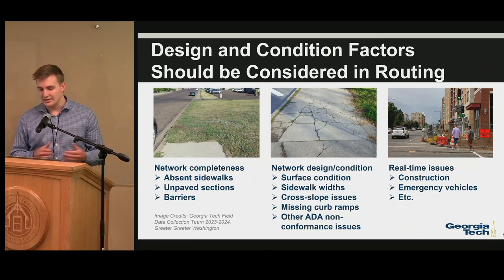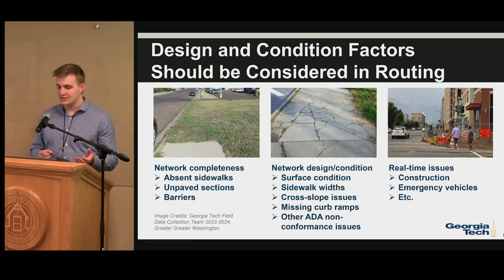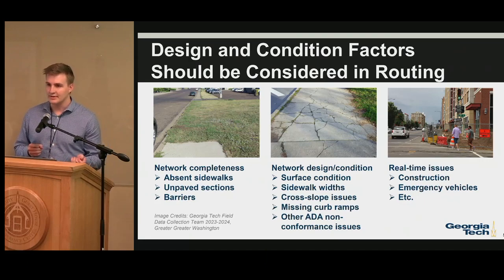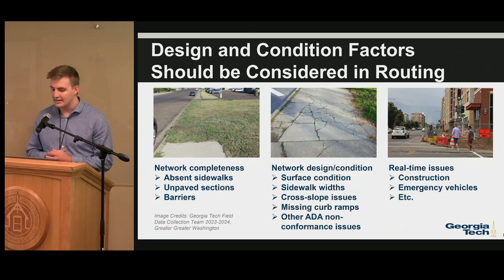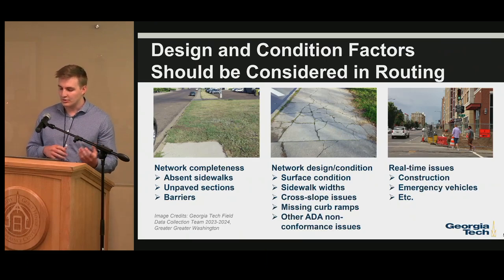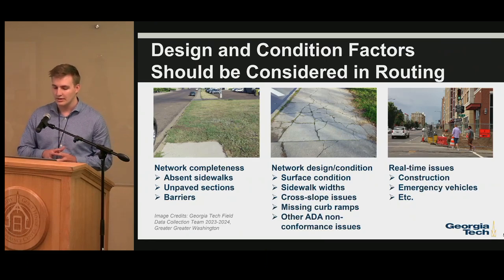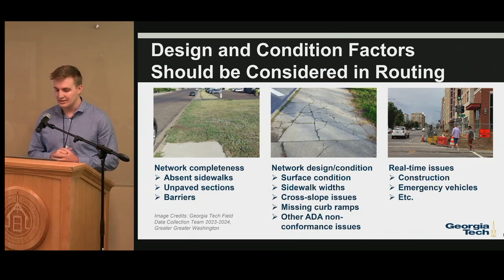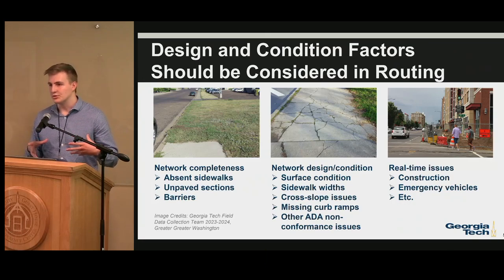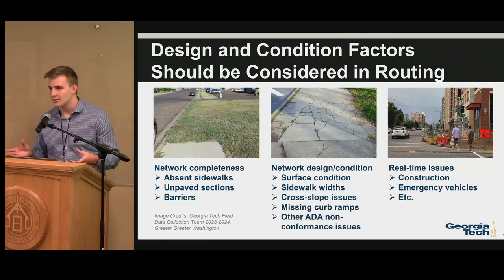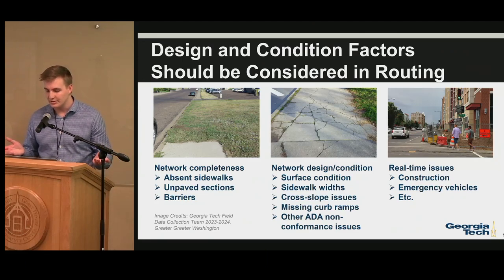Another factor is network design and conditions. You could have different surface conditions like cracks and other factors that make it more difficult for somebody in a wheelchair. There are also cross slope issues — the area from the road to the sidewalk — which can create problems for crossing streets, and then there are missing curb ramps. If there's no ramp at an intersection, that could be very difficult for a manual wheelchair user.